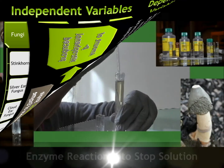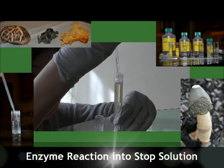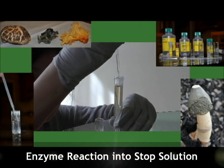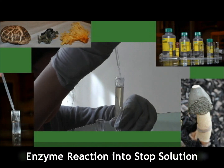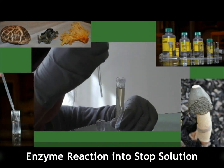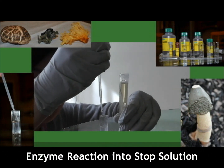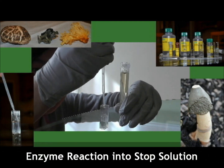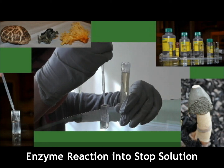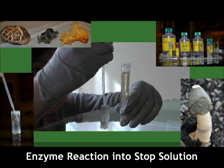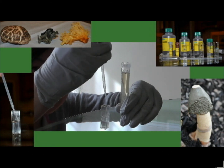500 microliters of enzyme reaction was placed into stop solution. The amount of p-nitrophenol produced is derived from a standard curve generated from the UV absorbance at 410 nanometers.